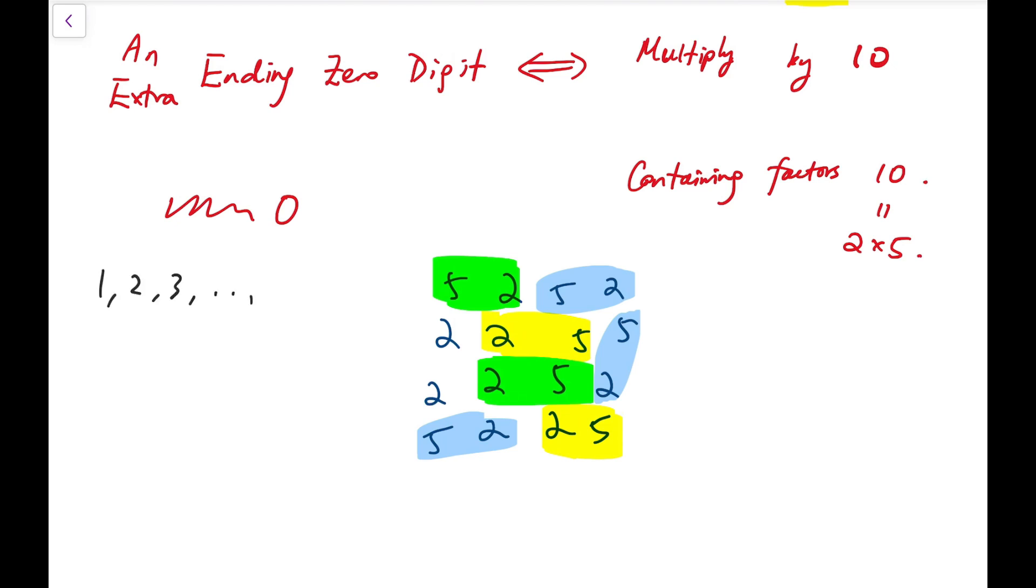When we are multiplying all natural numbers starting from 1 up to a certain number, say 1000 in our original problem. When we list out from 1 all the way up to 1000, it would definitely contain more even numbers than multiples of 5. So the problem can be degenerated into simply counting the number of prime factors 5 that the product contains.